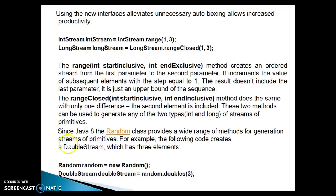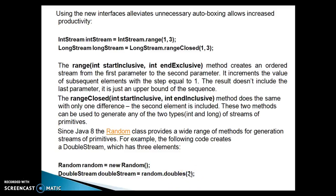These two methods can be used to generate streams of either int or long primitive types. Since Java 8, the Random class provides a wide range of methods for generating streams of primitives. For example, the following code creates a DoubleStream which has three elements — the Random class has a doubles method where you pass how many double numbers you want to generate.